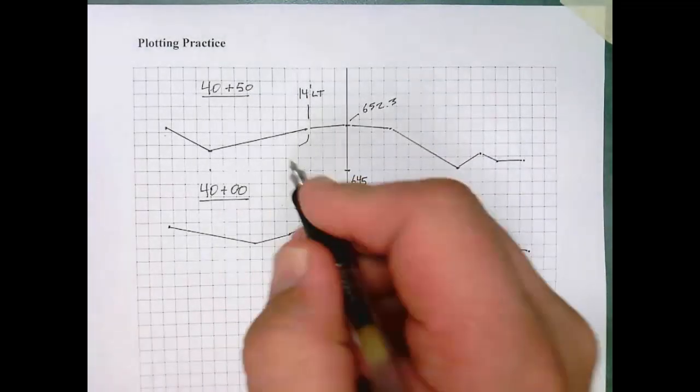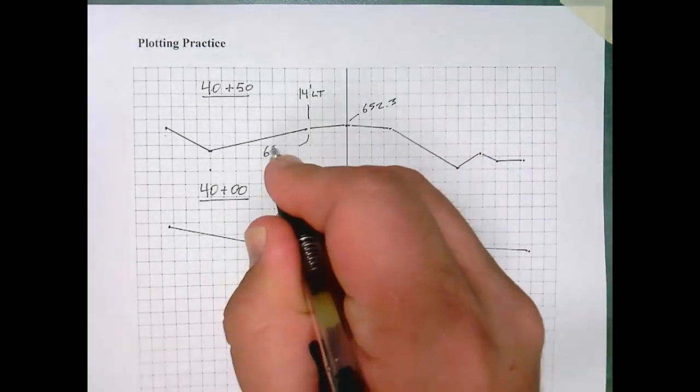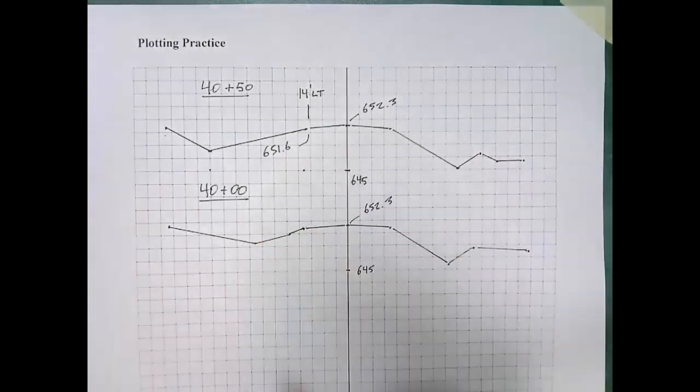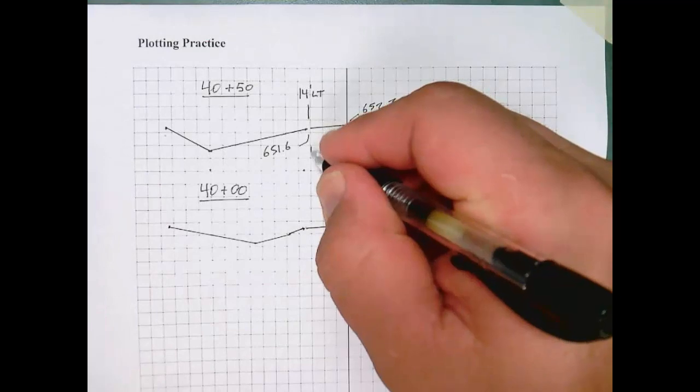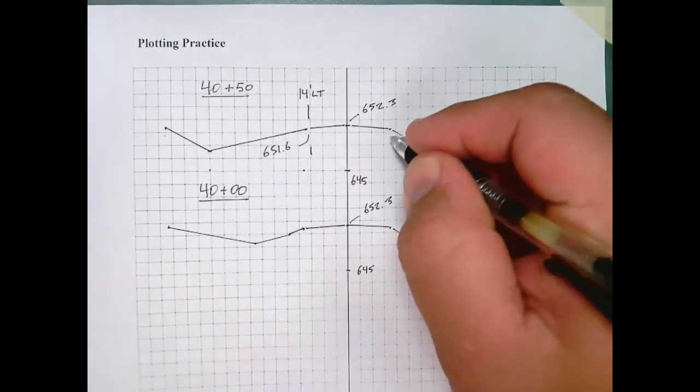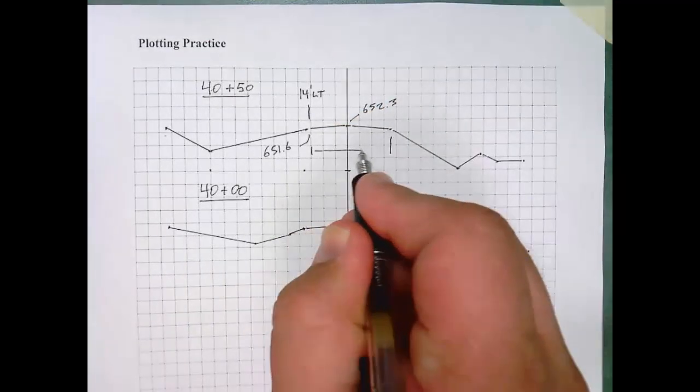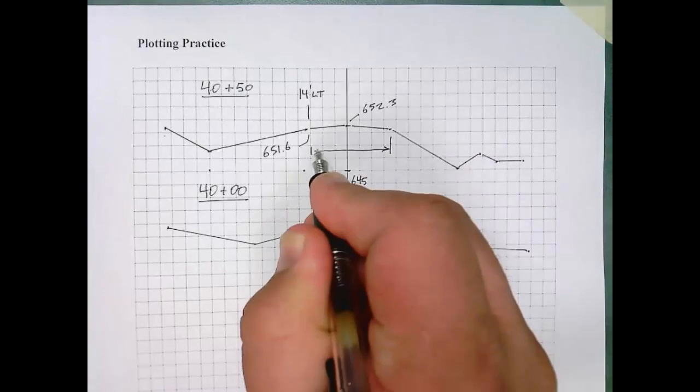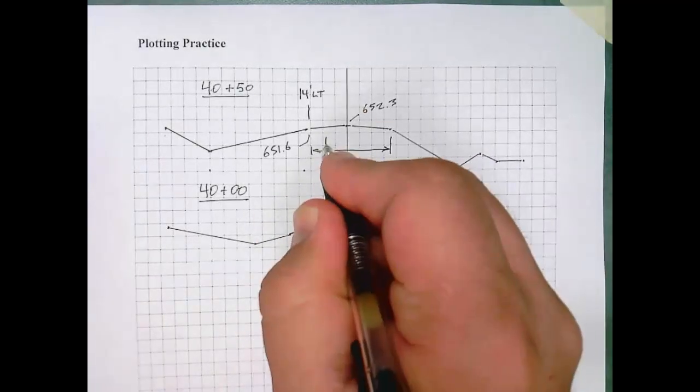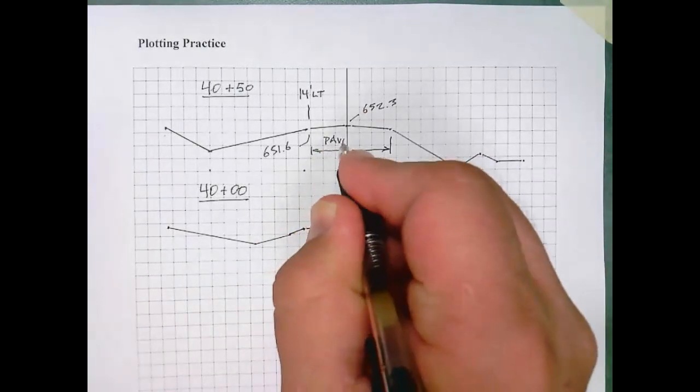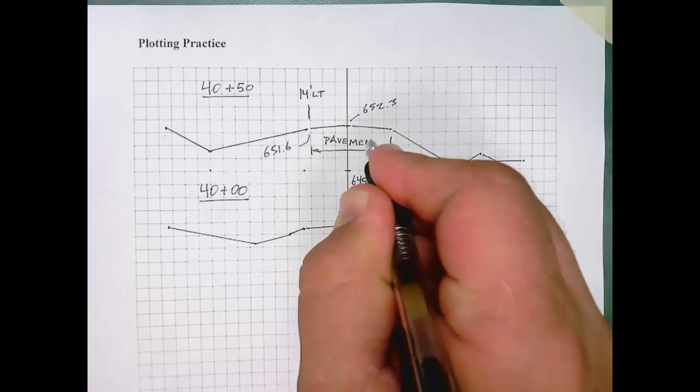We need to calculate the pavement cross slope for these sections. Well, the edge of pavement occurs at 14 foot left and 14 feet right.